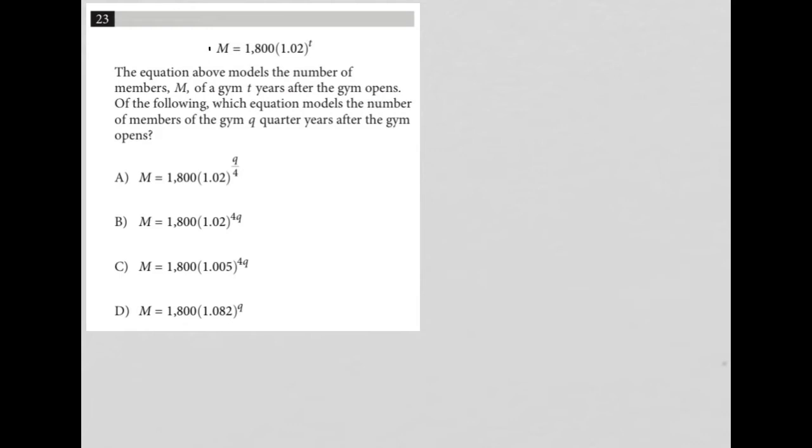Okay, so we're not really changing the model at all. We're just changing how the time is determined. So for instance, T equaling one would represent one year, but quarter years, this is a very interesting concept, right?